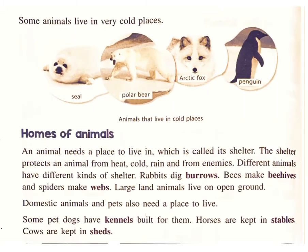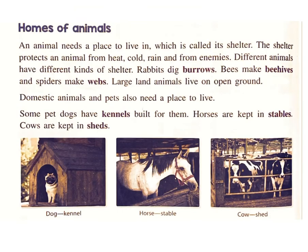Frogs and crocodiles also live both on land and in water. Some animals live in very cold places. An animal needs a place to live in, which is called its shelter. The shelter protects an animal from heat, cold, rain, and from enemies.